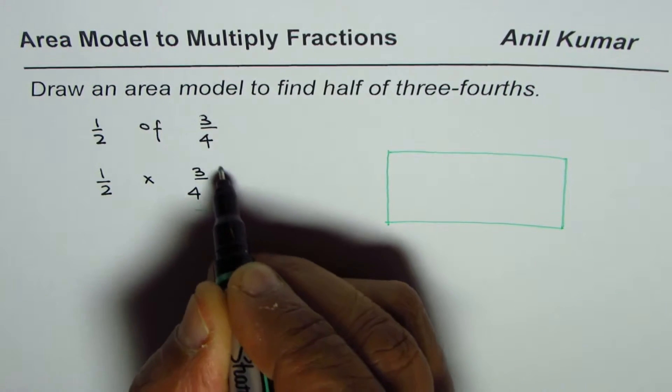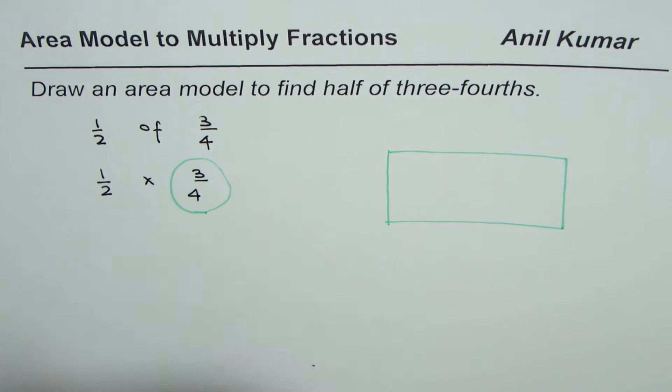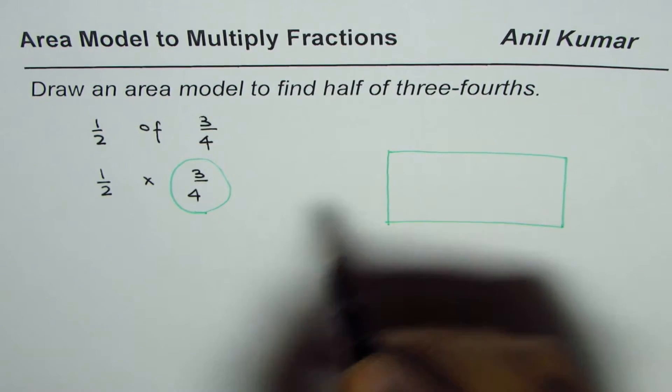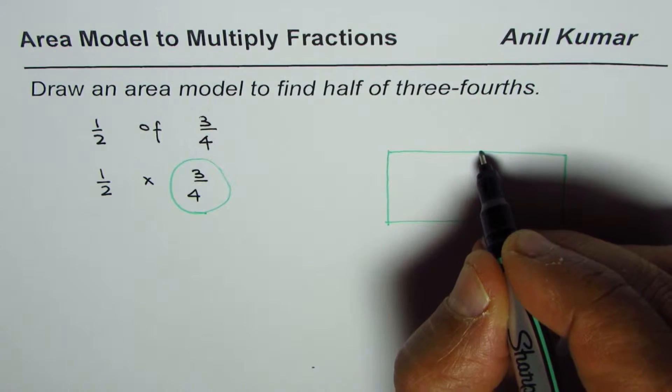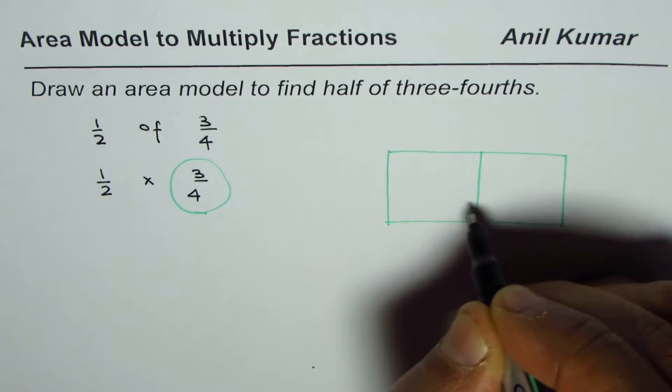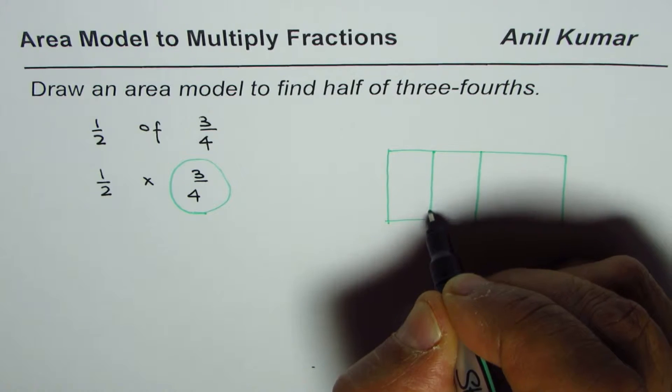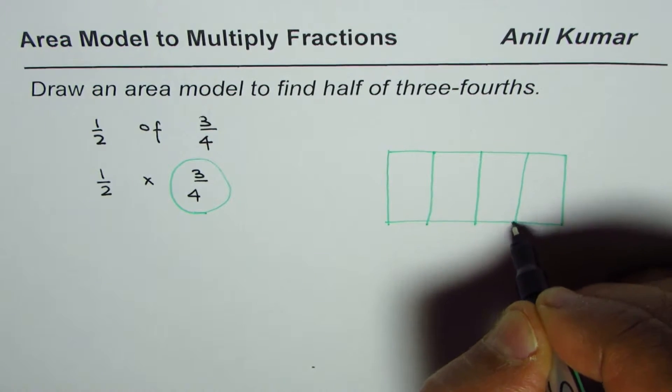Now first let me represent three-fourths. Three-fourths means we could have four columns and we'll select three of them. To make four columns, divide into equal halves and then half of half. So that gives you four columns.